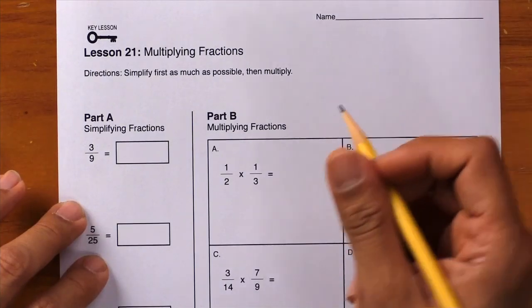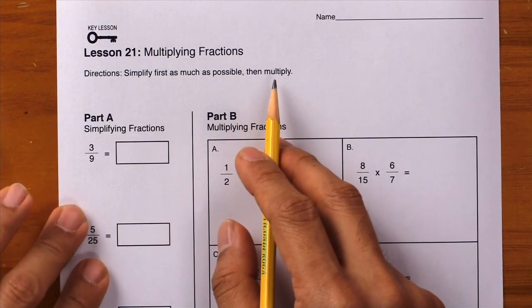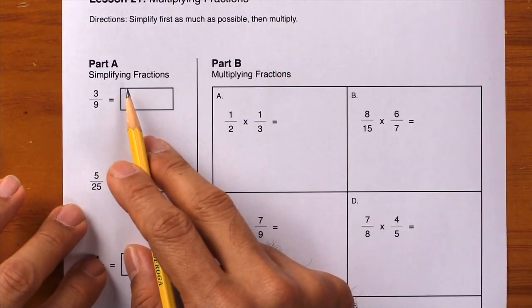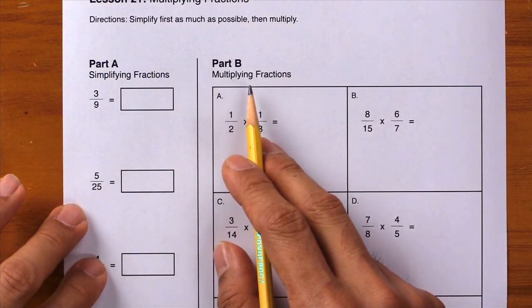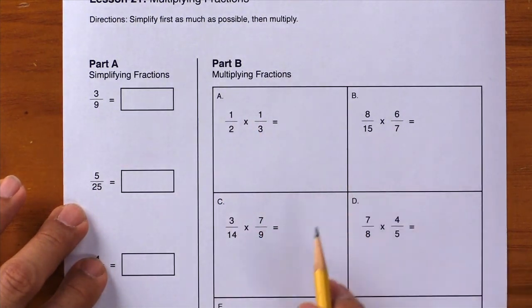Lesson 21: Multiplying Fractions. The directions say simplify first as much as possible, then multiply. We have two parts: Part A is simplifying fractions, and Part B is multiplying fractions. We'll do one example from Part A and three examples from Part B.